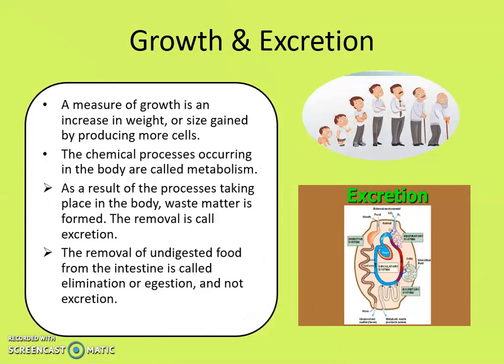Growth and excretion. A measure of growth is an increase in weight or size by producing more cells. The chemical processes occurring in the body are called metabolism. As a result of the processes taking place in the body, waste matter is formed. The removal of this waste is called excretion — waste matter like sweat. However, the removal of undigested food from the intestines such as feces is called elimination or ejection, and not excretion.